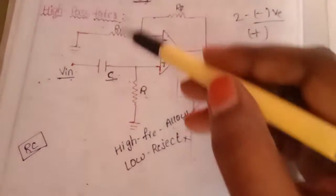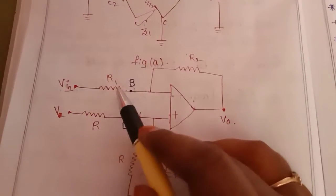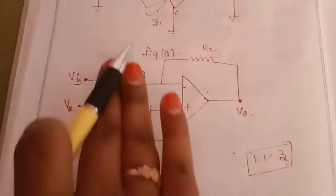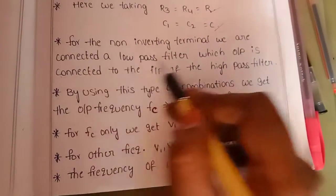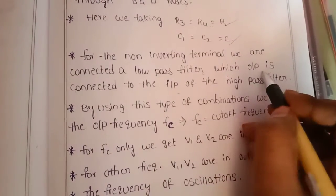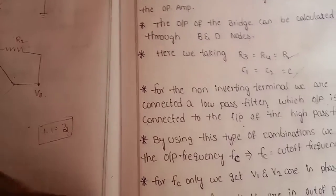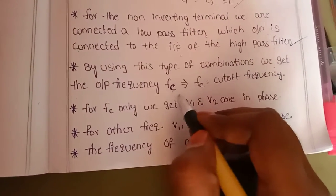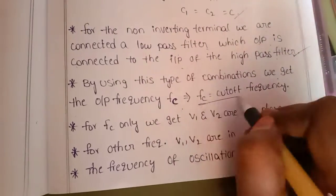The high pass filter is also one resistance and one capacitance. For the non-inverting terminal, we connect a low pass filter whose output feeds the high pass filter. By using this combination, we get the output at cutoff frequency fc.